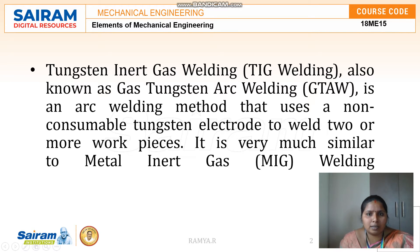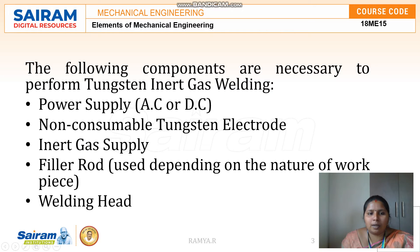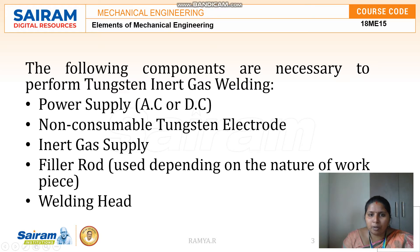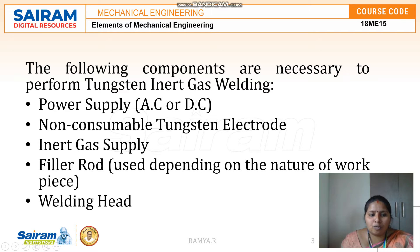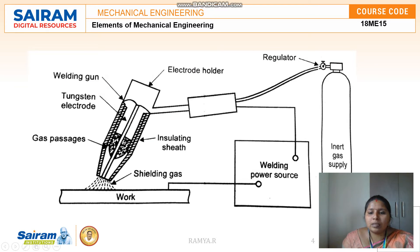The following components are necessary to perform Tungsten Inert Gas welding: a power supply (AC or DC), a non-consumable tungsten electrode, an inert gas supply, a filler rod depending upon the nature of the work piece, and a welding head.